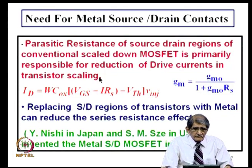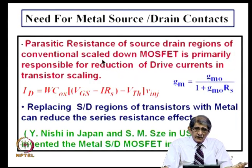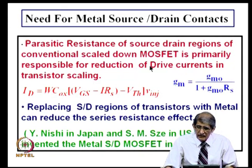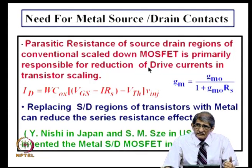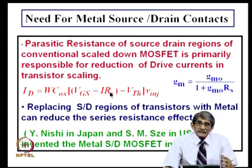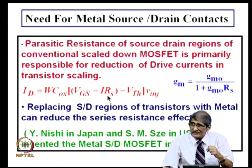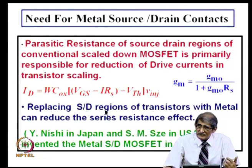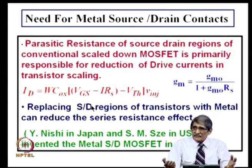Metal source/drain contacts have further benefits. The parasitic resistance of source/drain regions of a conventionally scaled MOSFET is primarily responsible for reduction in drive current. Whatever gate voltage you apply, part of it drops across the source resistance, so what is available for creating the channel is less. Therefore the drive current gets reduced and the speed of the device gets hurt — if you cannot drive a capacitor fast, speed will be slowed down.